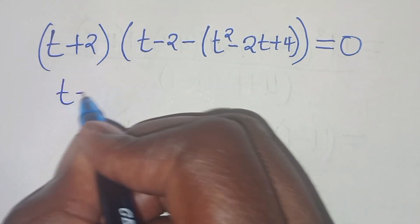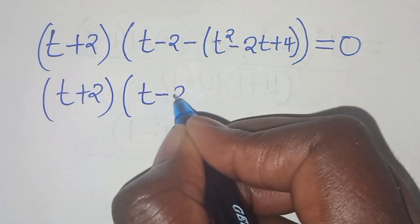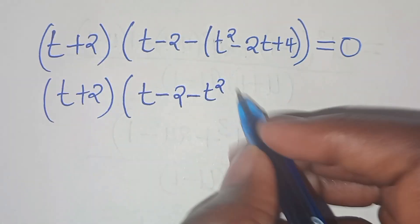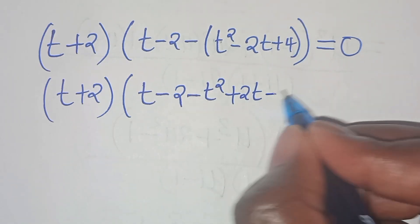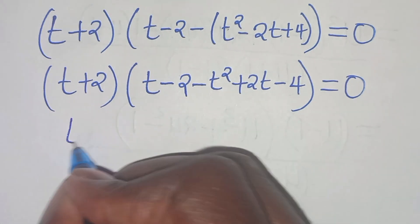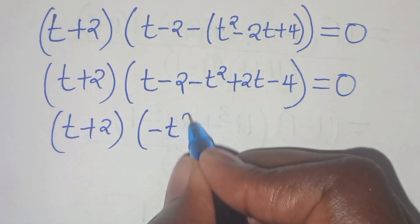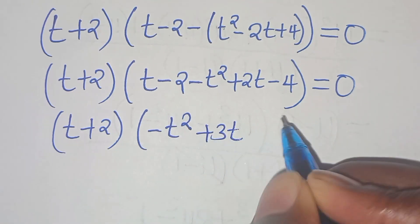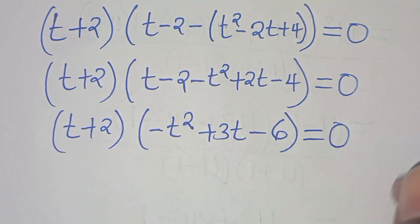Expanding: t plus 2 times, in parentheses, t minus 2 minus t squared plus 2t minus 4. Simplifying inside: t minus 2 minus t squared plus 2t minus 4 gives minus t squared plus 3t minus 6. This equals 0.